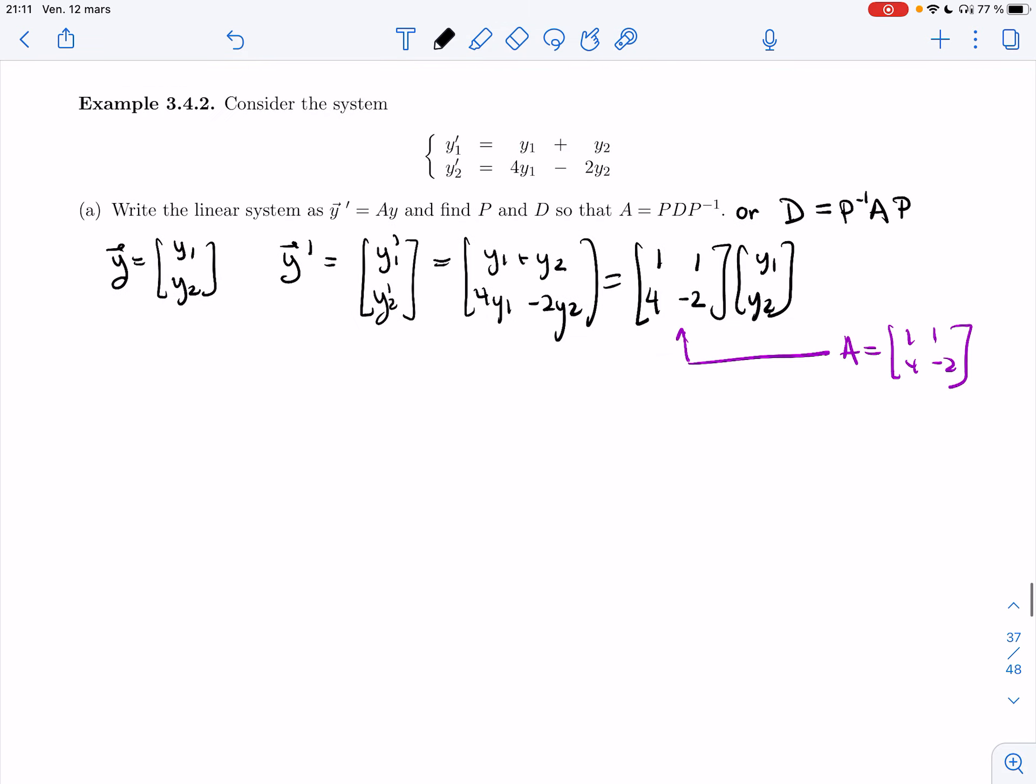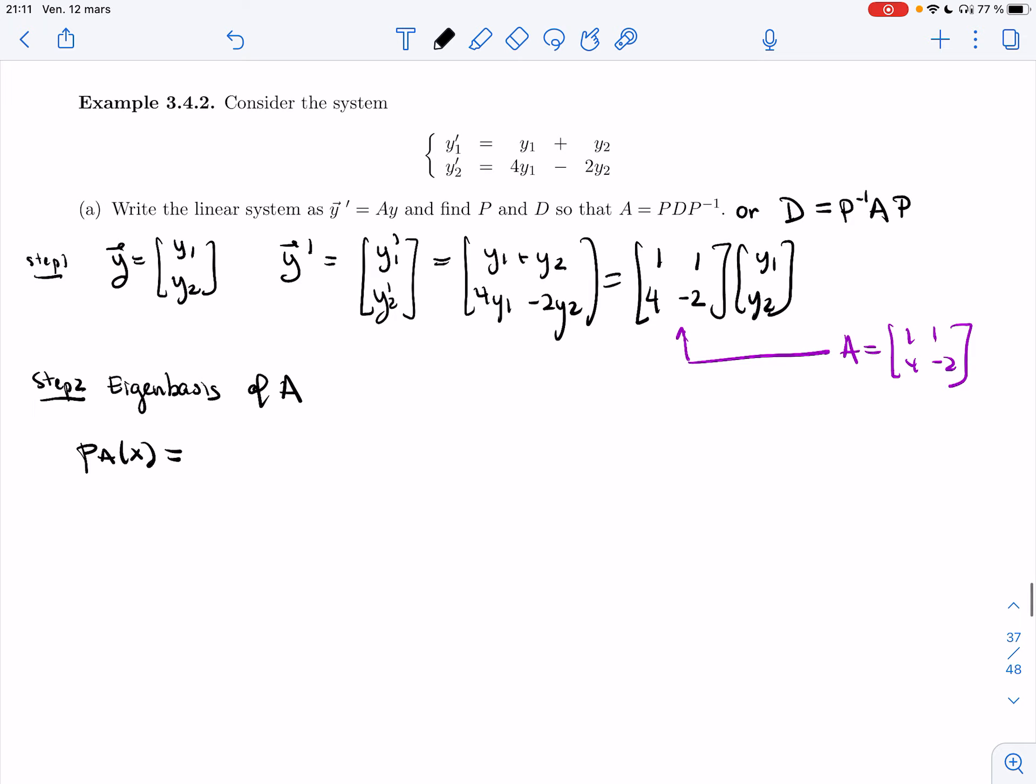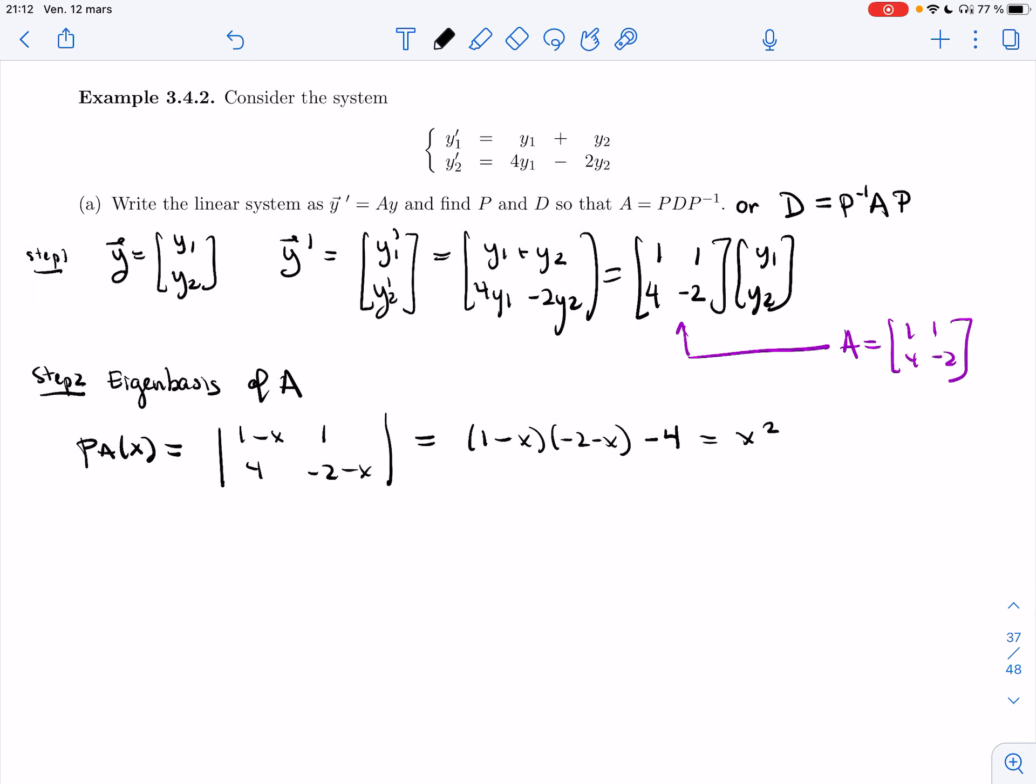I need to diagonalize that matrix A, so I need to find an eigenbasis of A. So let's find the characteristic polynomial of A. That's going to be 1 minus x, 1, 4, minus 2 minus x. I'm going to get 1 minus x, minus 2 minus x, minus 4. That's x squared plus 2x minus 1, so plus x. And then minus 2 minus 4 is minus 6.